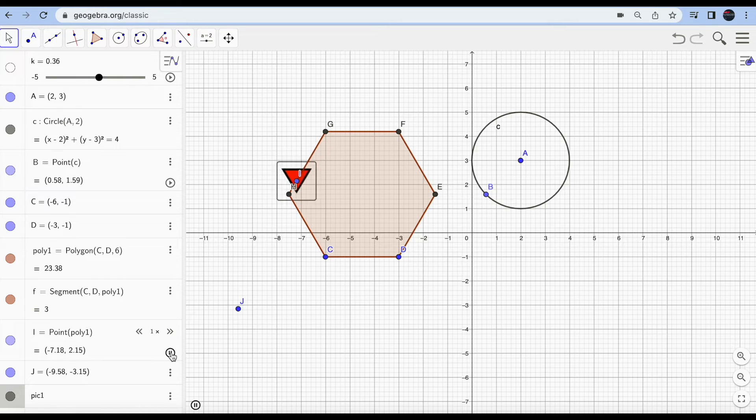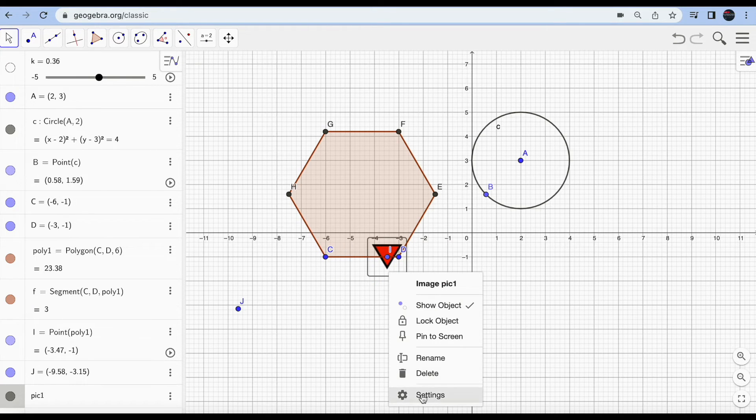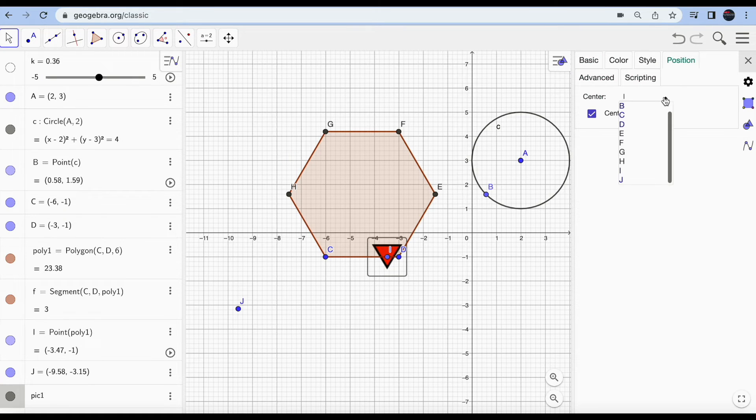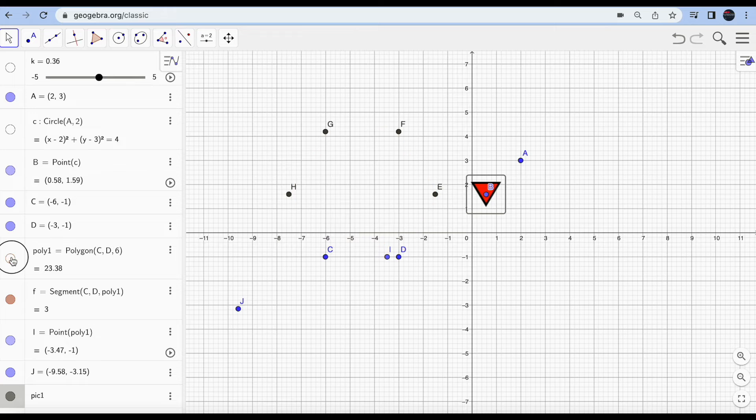Look, the arrow has started moving. So that's how you can create your animation. Just try by adding different objects and different paths. Let's say I'm going to change the picture and its position to B because now it should move along the circle.